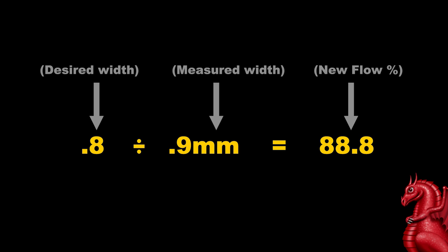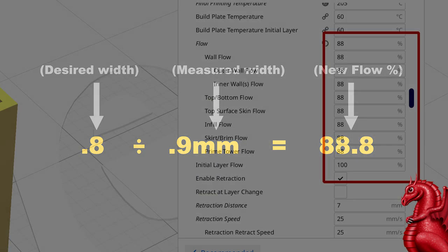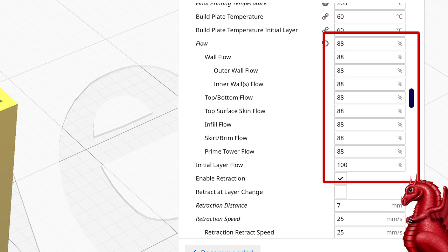I'm going to take my desired width, which is 0.8, divide it by my average of 0.9. When you measure your cube, you're going to want to measure it at least once on each side, so you want to take four measurements and average them. Some people take two measurements per side for eight total and average them. In my case my average was 0.9 and I come up with a number of 88.8. That's my new flow percentage. I'm just rounding that down a hair. It's always best to be a little under extruded on these, so I'm going to put in 88 as my correct flow.